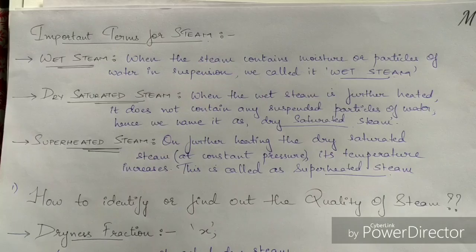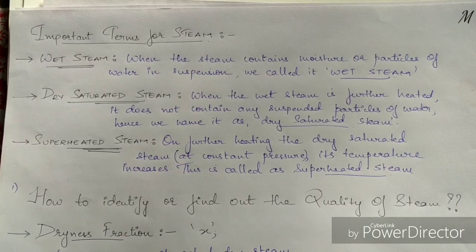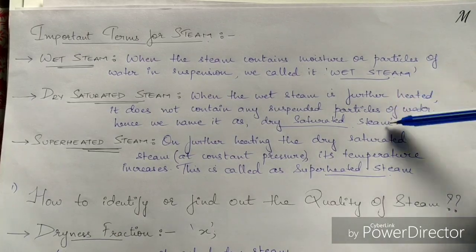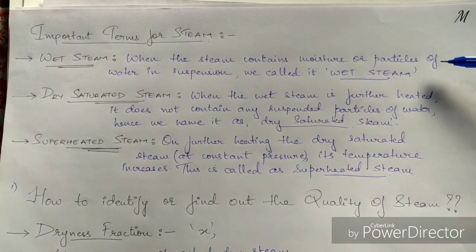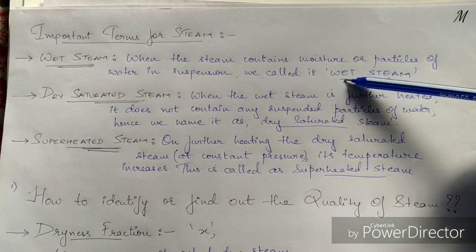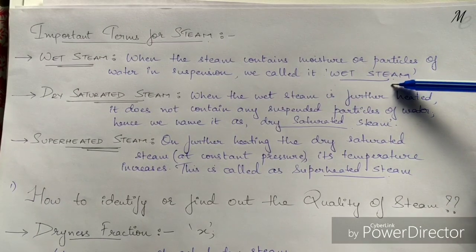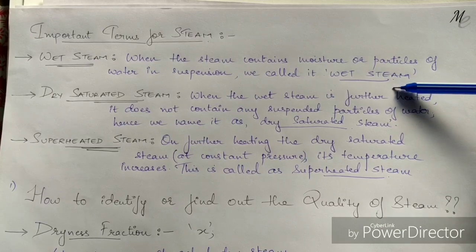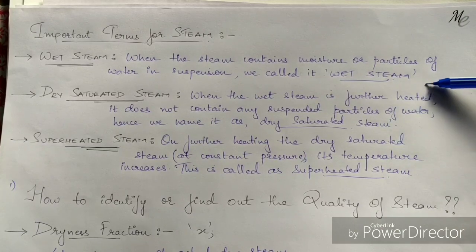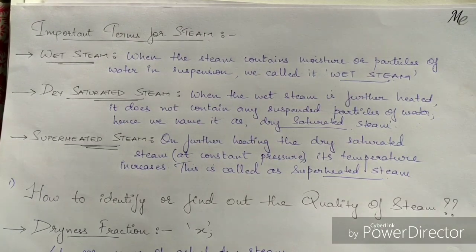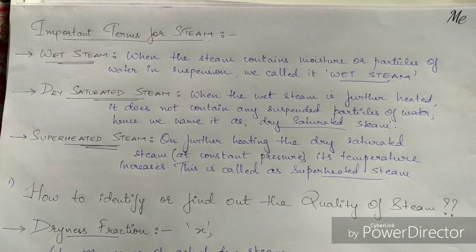First, let us discuss various types of steam, starting with wet steam. When the steam contains moisture or particles of water in suspension, we call it wet steam. In other words, it has not yet completed its process of vaporization.